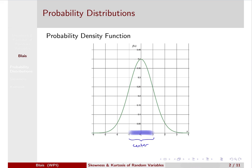Looking at values between one and two standard deviations above the mean, or one and two standard deviations below the mean, we call these the shoulders of the distribution. This piece here we call the right shoulder, and this piece here we call the left shoulder. Anything beyond two standard deviations from the mean we call the tails — here we have the right tail, and here we have the left tail.